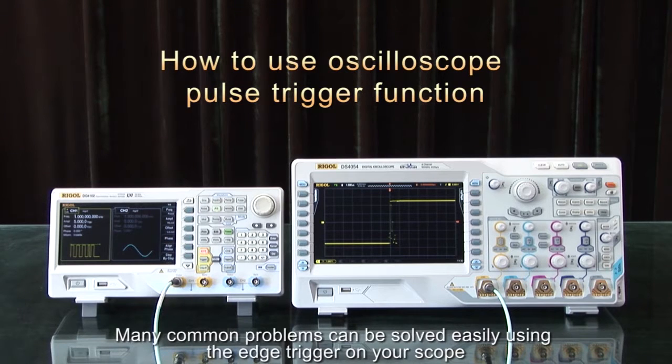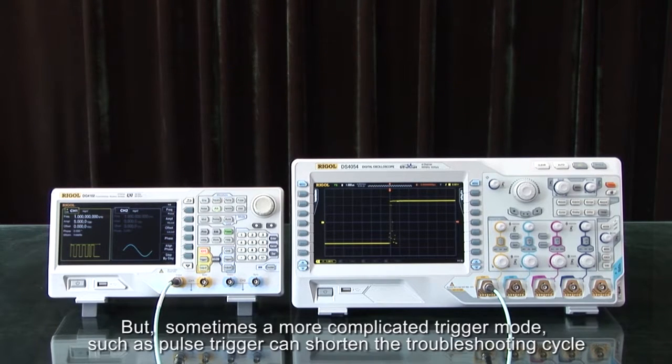Many common problems can be solved easily using the edge trigger of your scope, but sometimes a more complicated trigger mode, such as pulse triggering, can shorten the troubleshooting cycle.